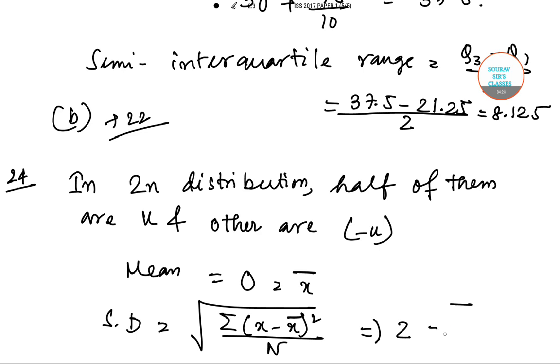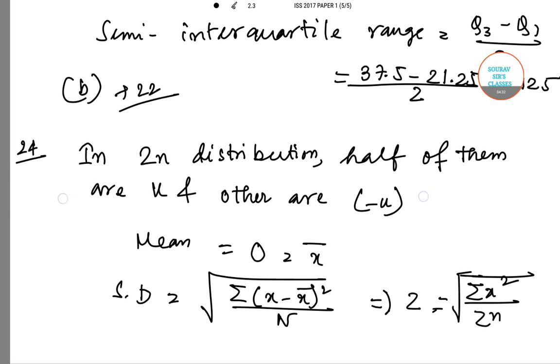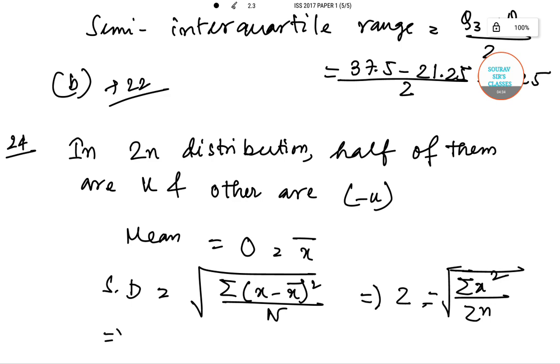That will equal 2, equals √(Σx²/2N). This gives us 4 equals Σx²/2N, that means 4 equals 2NK²/2N.